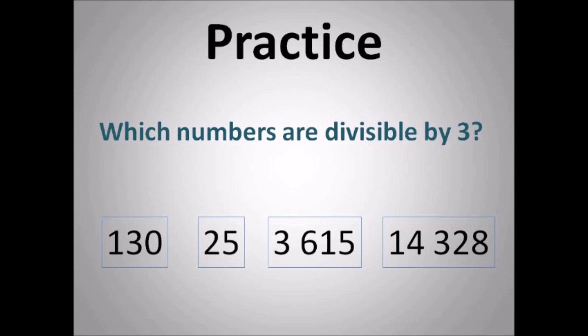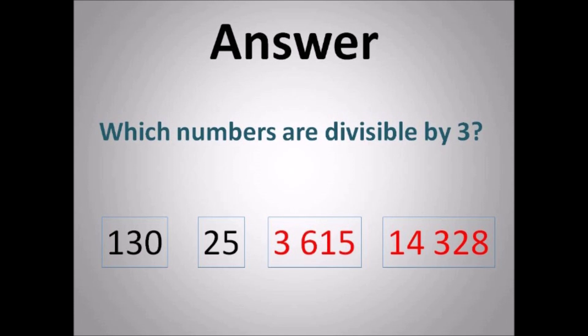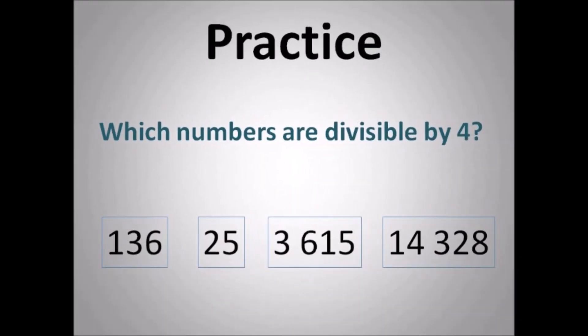Let's practice again. Which numbers are divisible by 3? The digits must add to give you a multiple of 3. So 6 and 3 give 9, and 1 plus 4 plus 3 plus 2 plus 8 is 18 — 18 is a multiple of 3. For 5105, the digits add to 11; for 8210, they add to 11 plus 7 is 18. The first two numbers, 130 gives 4 and 25 gives 7 — not multiples of 3.